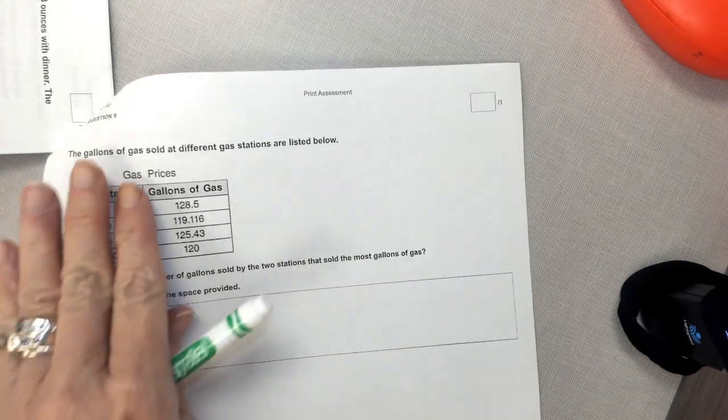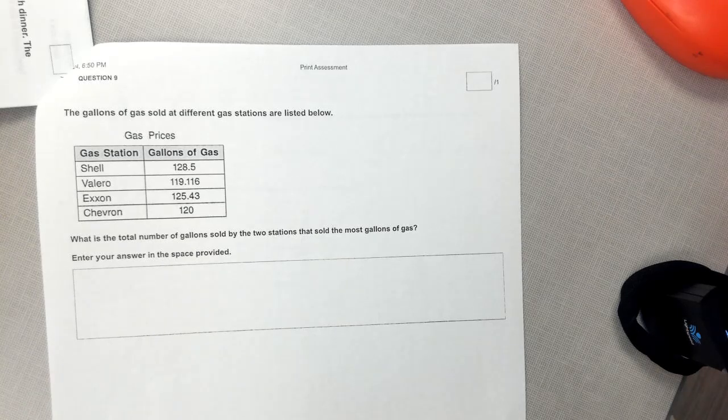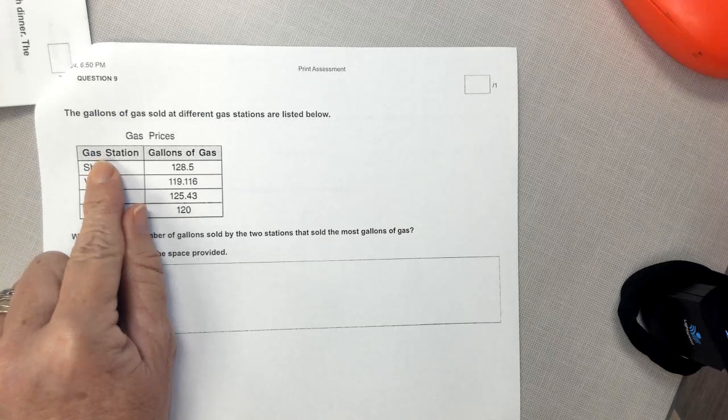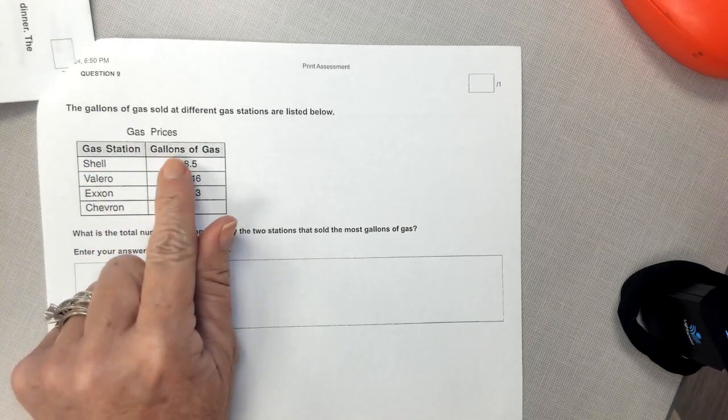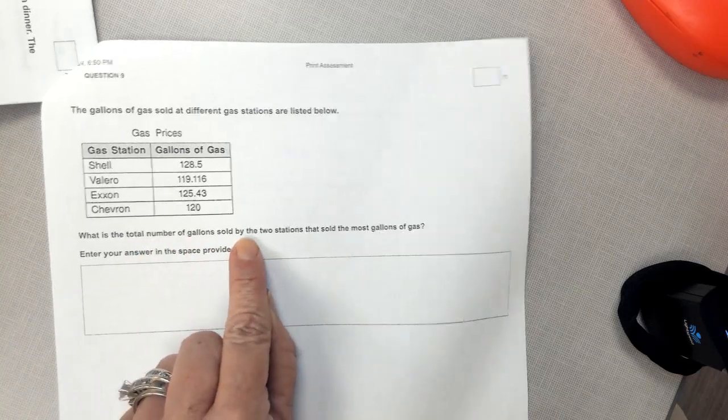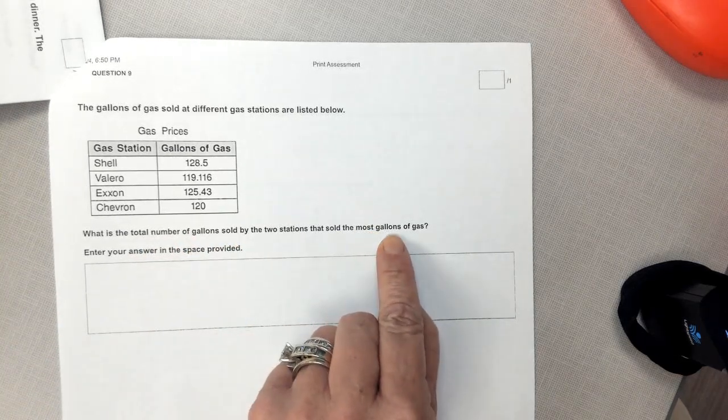Alright, for number nine, we have the gallons of gas sold at different gas stations are listed below. So we have the gas prices, we have the different types of gas stations with the amount of gas that they sold. What is the total number of gallons sold by two gas stations that sold the most gallons of gas?